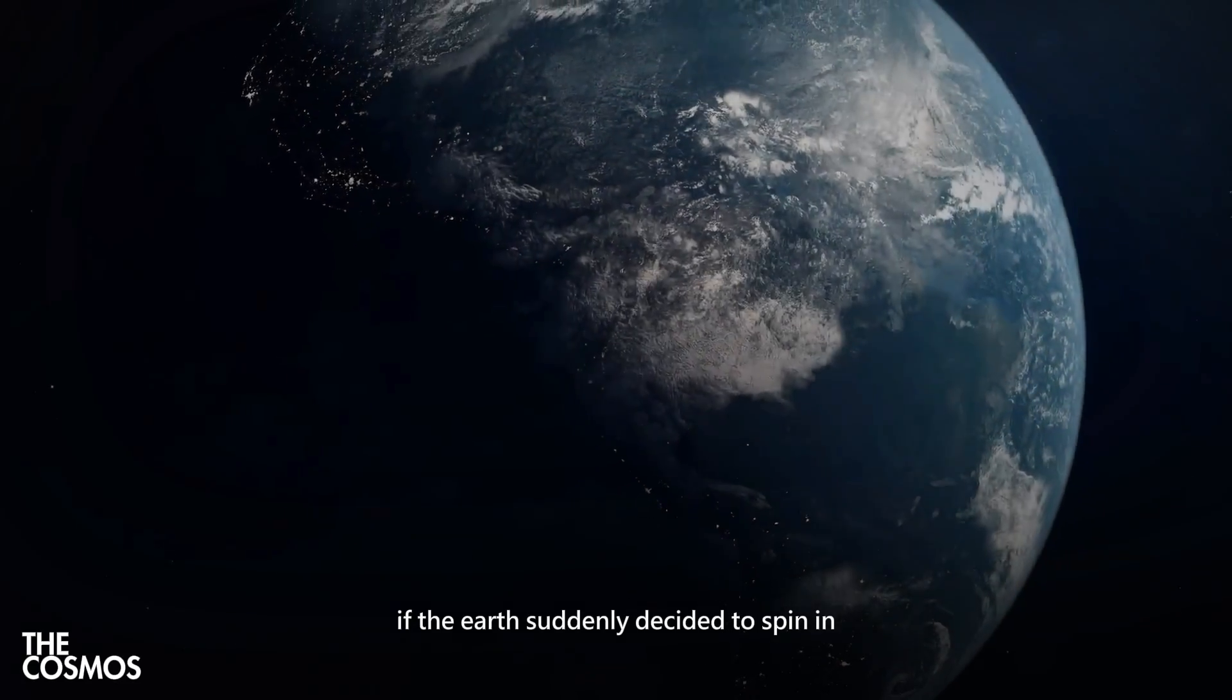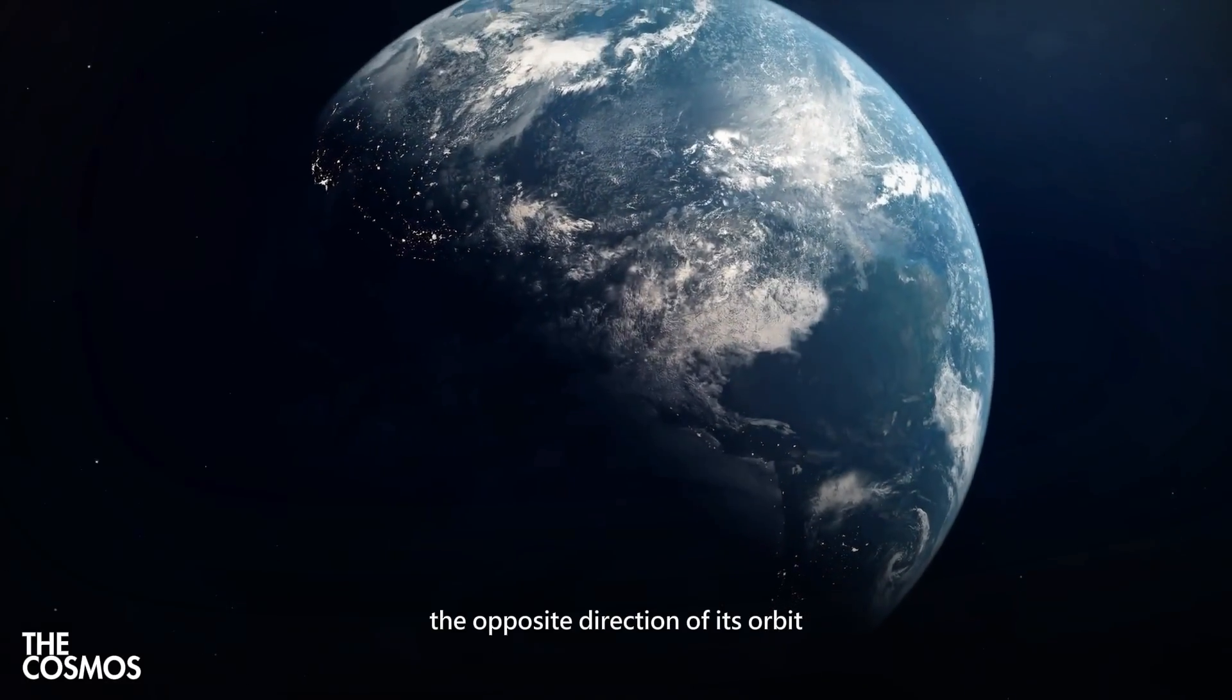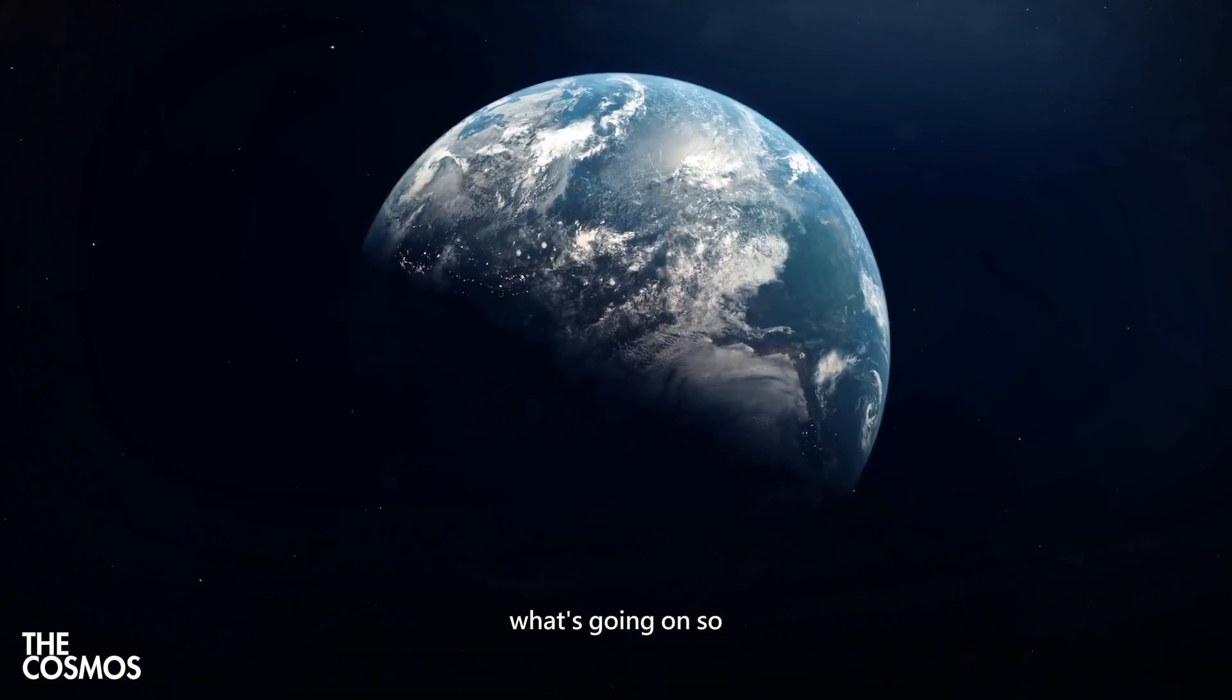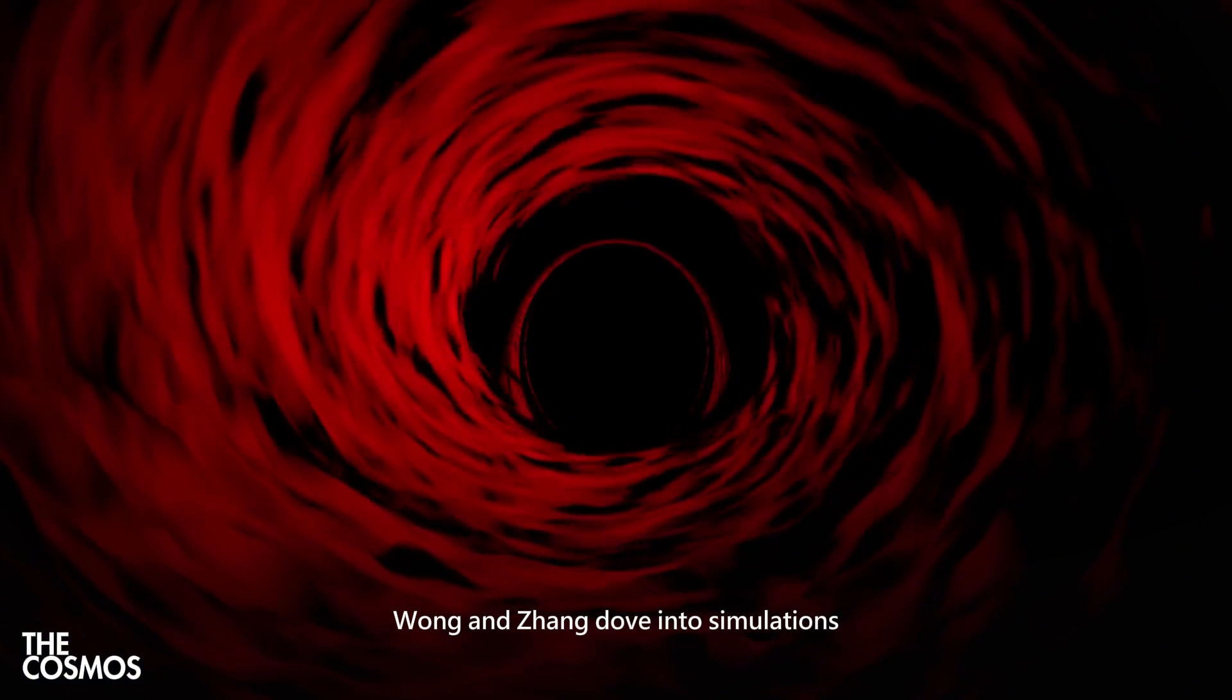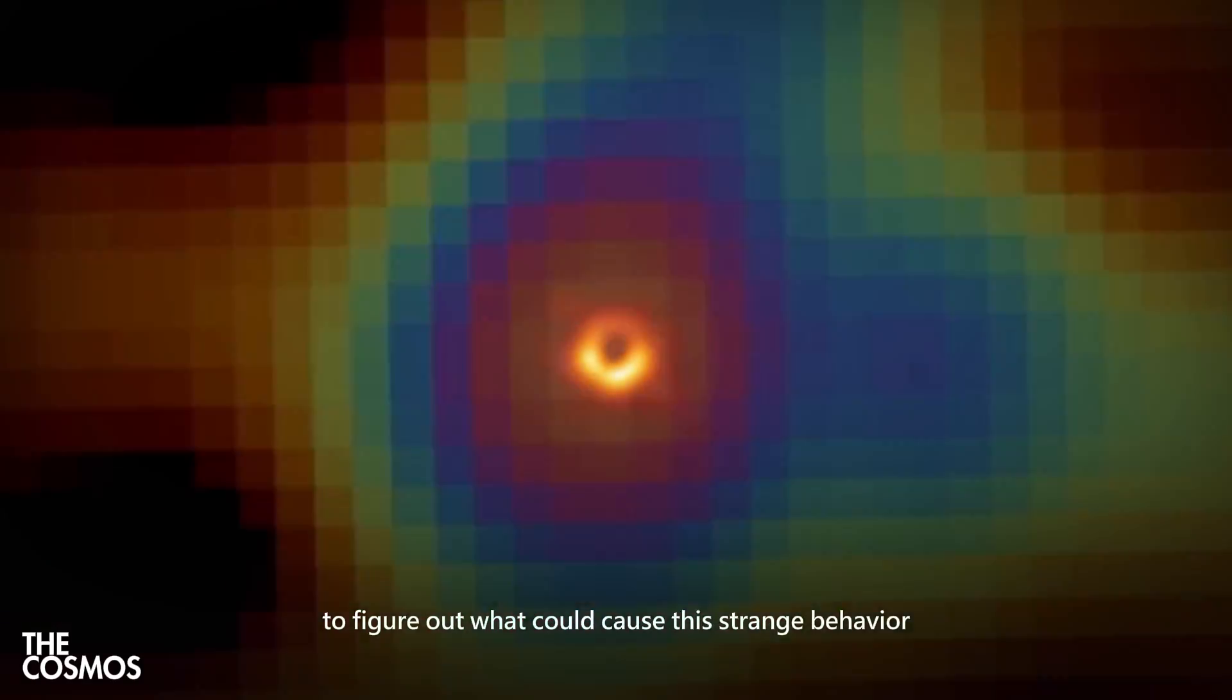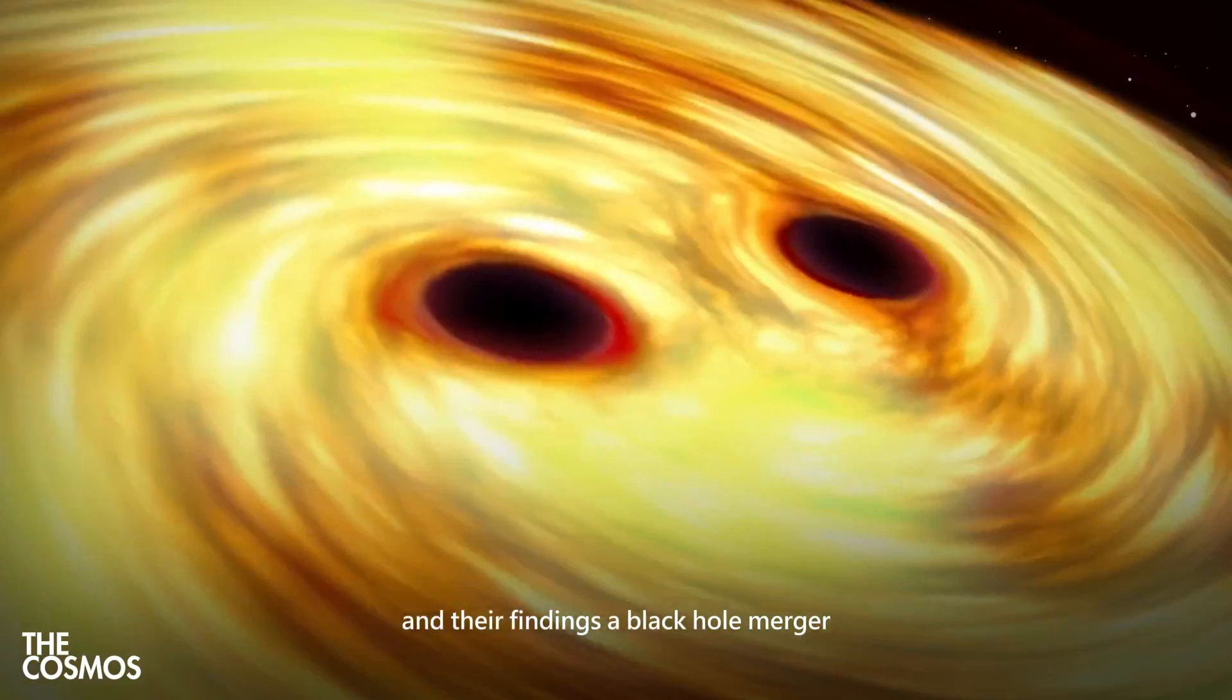Imagine if the Earth suddenly decided to spin in the opposite direction of its orbit. Everyone would be like, uh, what's going on? So, Wang and Zhang dove into simulations to figure out what could cause this strange behavior. And their findings? A black hole merger.